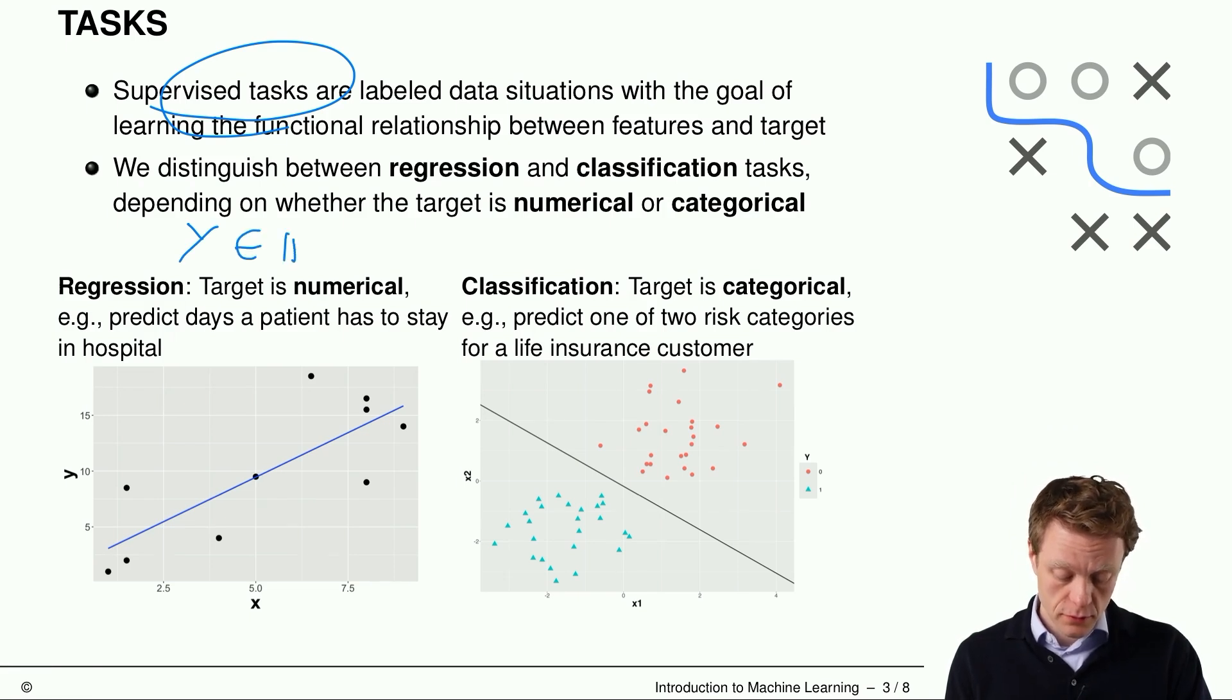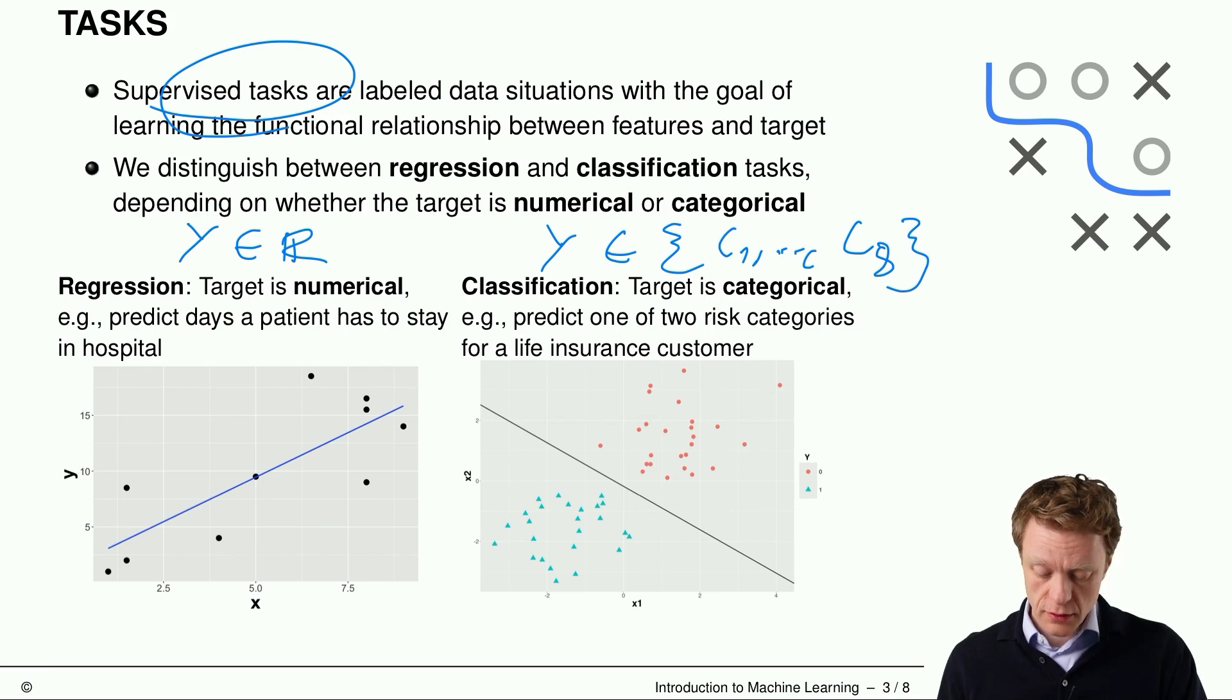So if y is numeric, so from some, for example, some real number from the real numbers, and an example could be to predict days a patient has to stay in the hospital, then we are on the regression side. And if y comes from a finite set of categories, c1 to cg, then we are on the classification. For example, we perhaps want to predict one of two risk categories for life insurance customer.